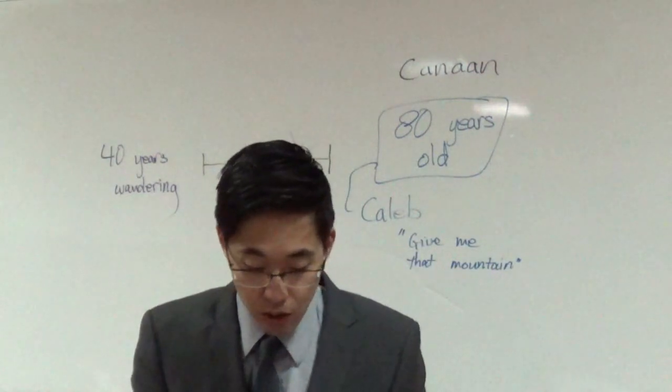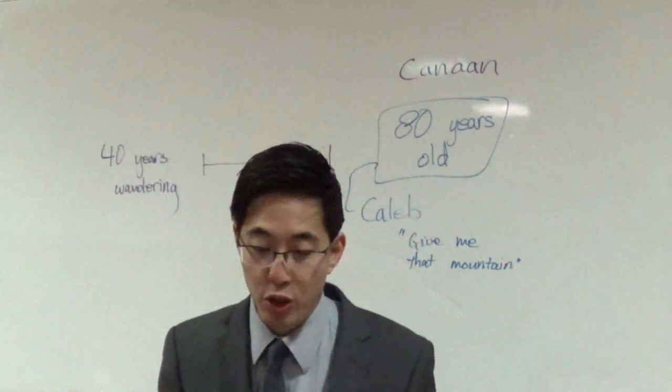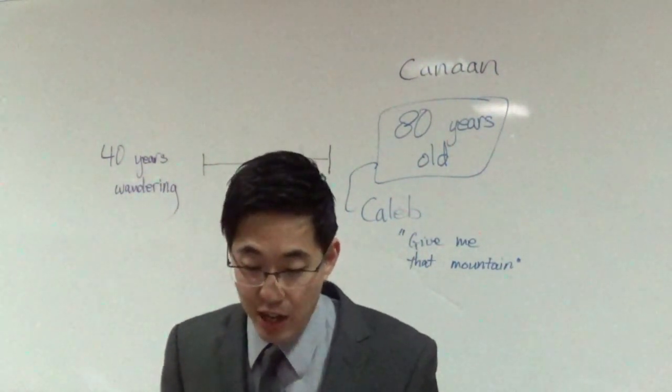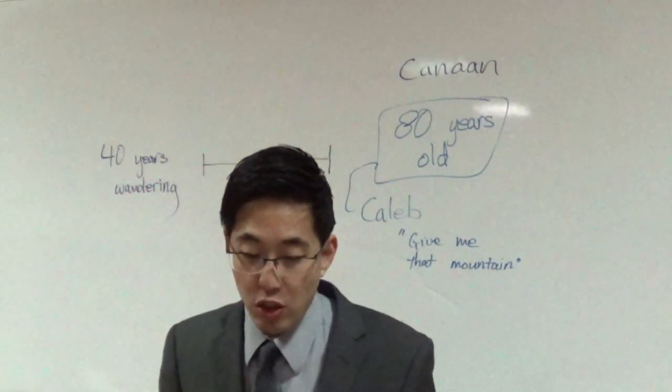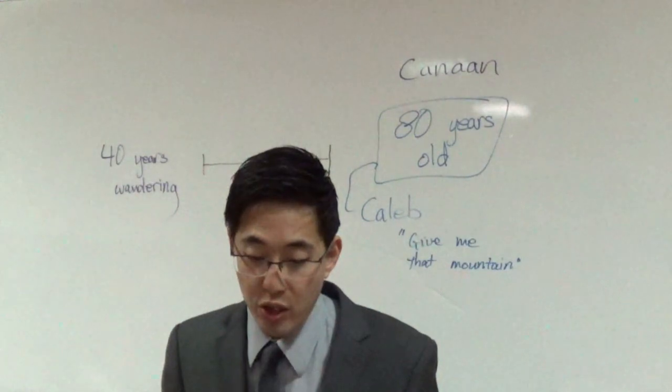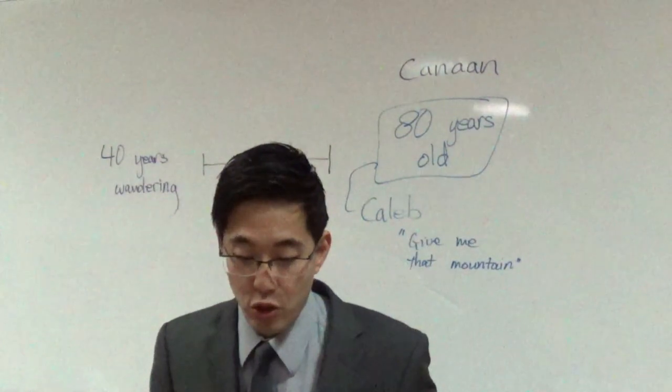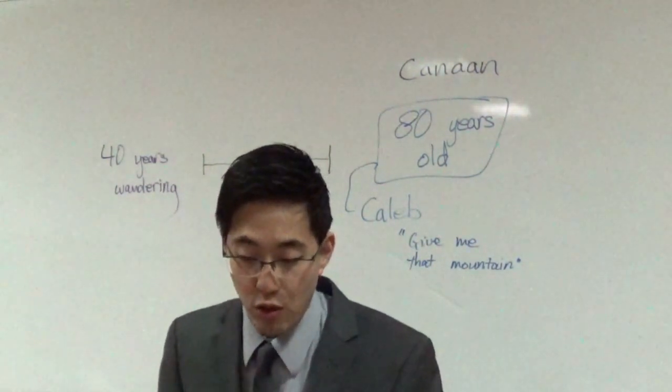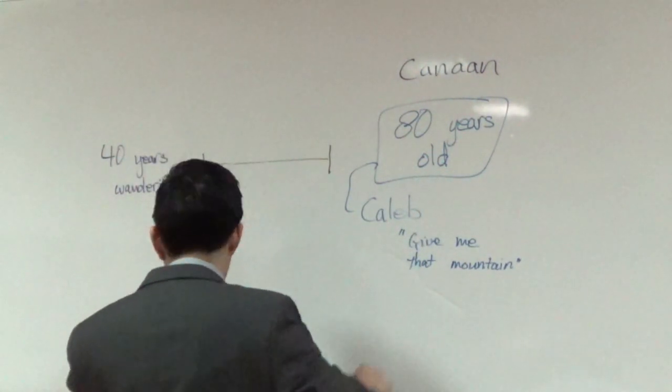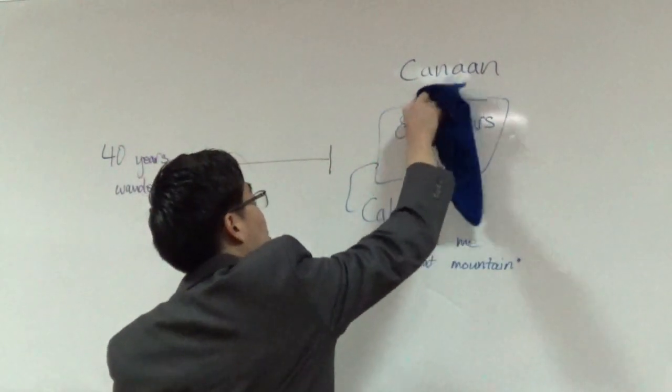Let's read Joshua 14 first, verse 10: 'Now behold, the Lord hath kept me alive, as he said, these forty and five years, even since the Lord spake this word unto Moses, while the children of Israel wandered in the wilderness: and now, lo, I am this day fourscore and five years old.' So that's pretty much a lot of giveaways over there. So he's 85 years old at this time, but he already gave a big hint.